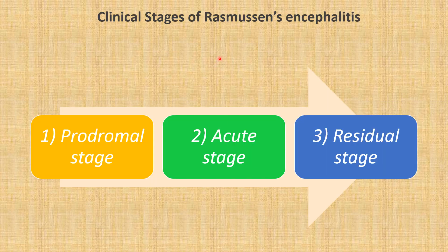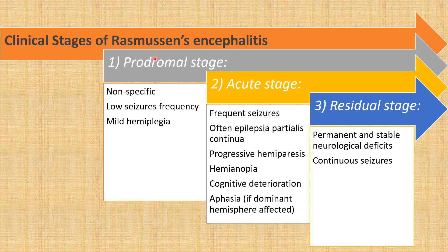There are three clinical stages of Rasmussen's encephalitis: the prodromal stage, the acute stage, and the residual stage. In the prodromal stage, the patient will have non-specific signs and symptoms, low seizure frequency, and mild hemiplegia. The patient then progresses to the acute stage, characterized by frequent seizures — labeled epilepsia partialis continua — progressive hemiparesis, hemianopia, cognitive deterioration, and aphasia if the dominant hemisphere is affected. From the acute stage, the patient progresses to the residual stage, with permanent stable neurological deficits and continuous seizures. Our patient was between the prodromal and the acute stage.